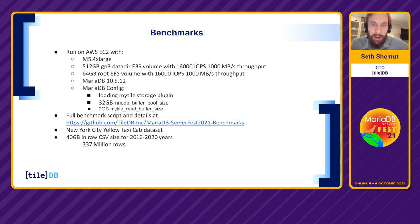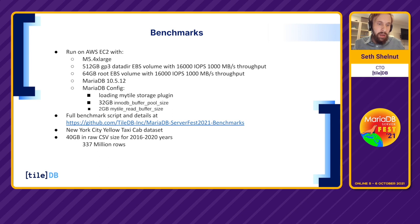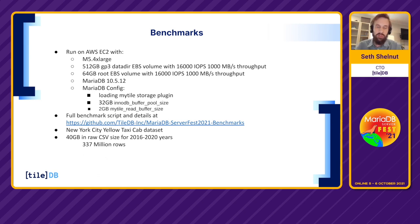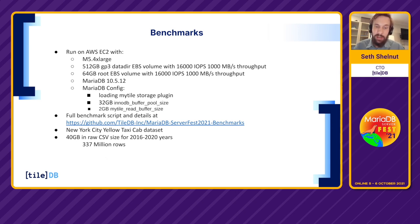Let's look at some benchmarks showing actual performance differences. We used an AWS EC2 M5 4XL instance with 16 CPUs and 64GB RAM. All benchmark details are available on our GitHub repo. We used the New York City yellow taxi cab dataset — about four years of data, approximately 40GB of raw CSVs and 337 million rows total — a decent-sized dataset to show performance benefits of these pushdowns.